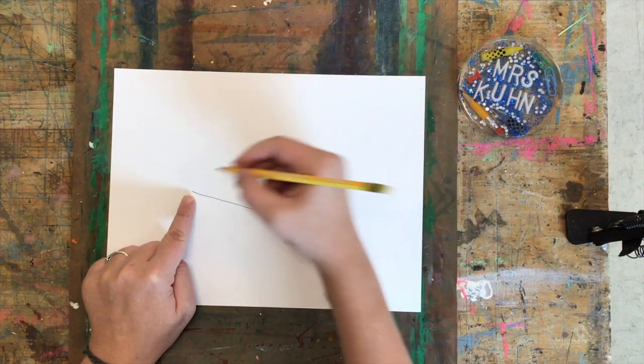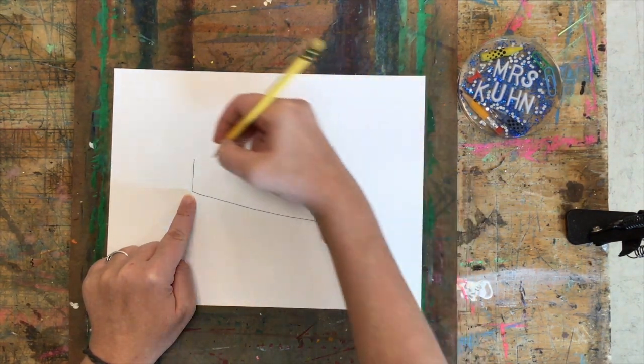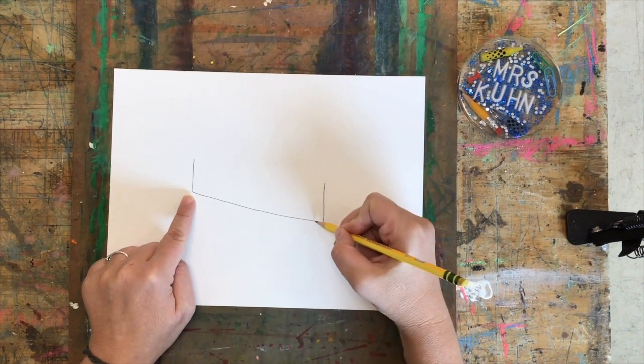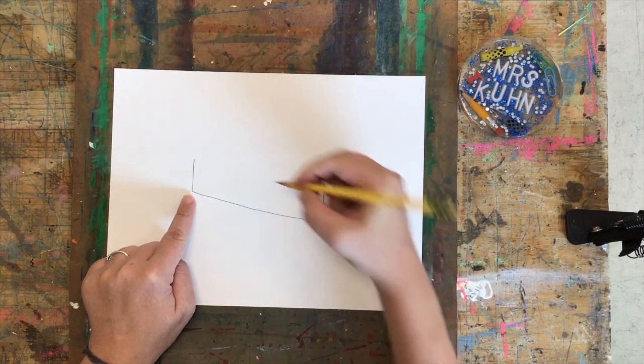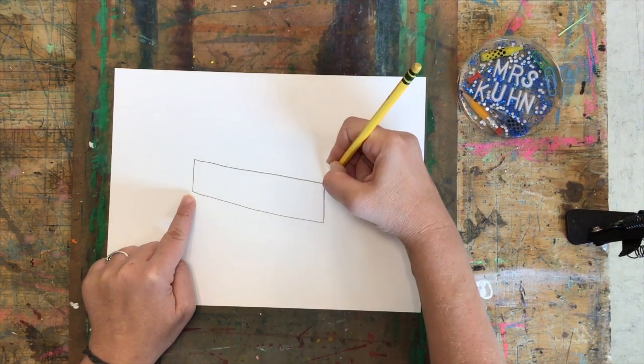And then I'm going to draw a short line that comes up, and I'm going to stay parallel to this line. So if you drew a straight line, you need to draw straight again. If you did a diagonal, you're going to draw a diagonal.